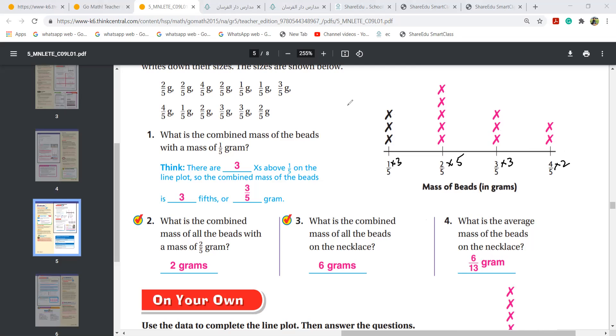Do you remember this that I told you? When it is 1 over 5 and there are 3 crosses, so you multiply with 3. Remember this? There are 3x above 1 over 5, so it becomes 3 over 5 gram. Because they ask you only for 1 over 5. So 1 over 5 has 3x above, so that is 3 fifths. 3 times 1 over 5, that is 3 fifths gram.